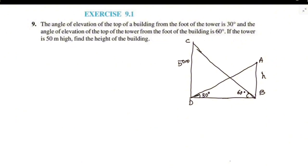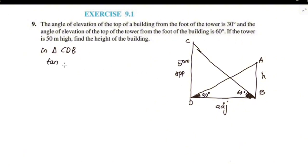We are going to solve two triangles. In triangle CDB, the angle is 60 degrees. The opposite side is CD and the adjacent side is BD. Opposite over adjacent is tan. So tan 60° = CD/BD. Tan 60° = √3, so √3 = 50/BD.